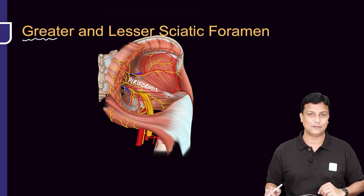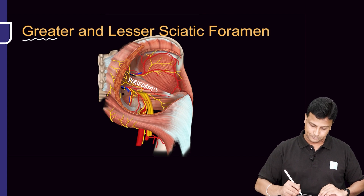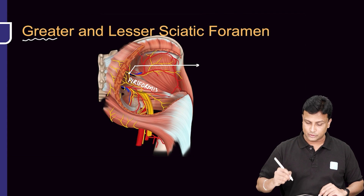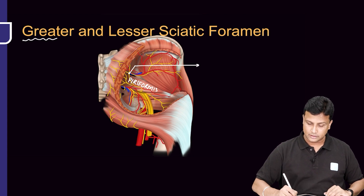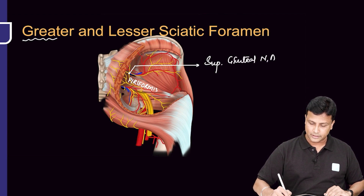Let us see one by one. First, let's see above the piriformis. Above the piriformis, you are able to see that there will be the superior gluteal nerve, superior gluteal artery, and superior gluteal vein.